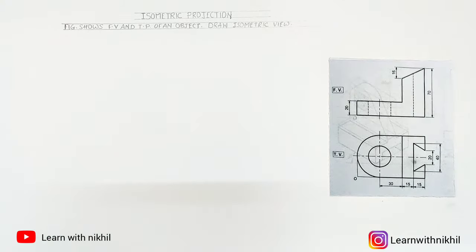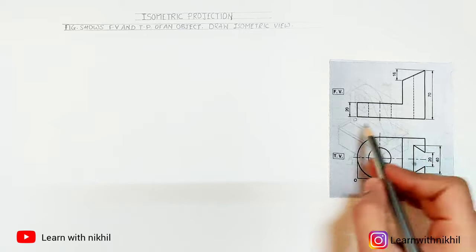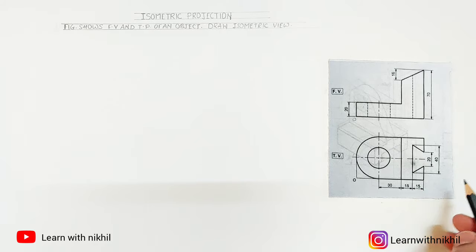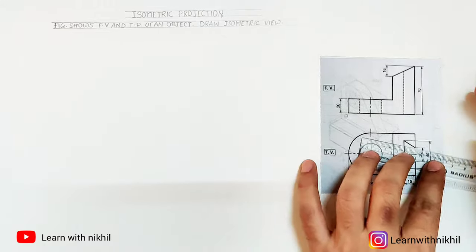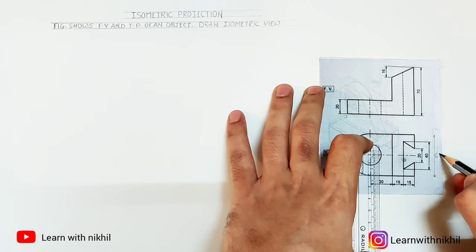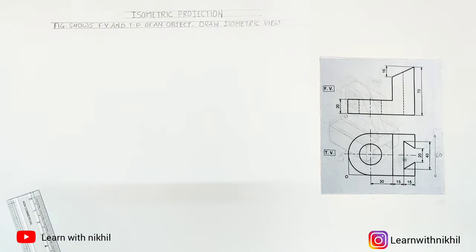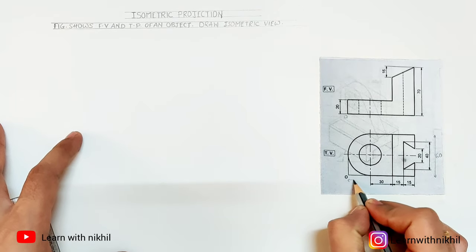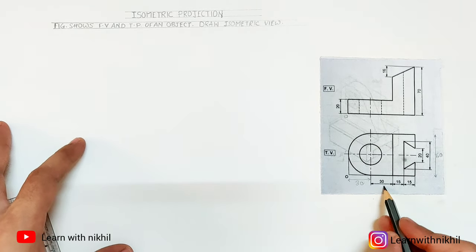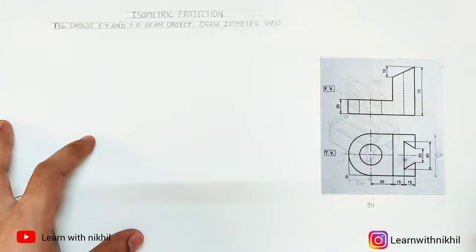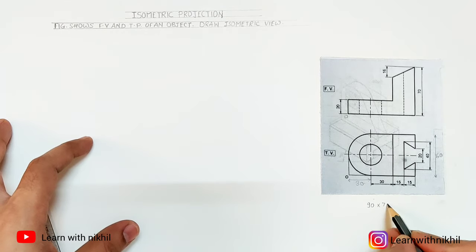This is point O, which will be the starting point. The width of the total front view is 30 plus 15 plus 15. The diameter of the semicircle is not given, so we'll consider it as 60 millimeters. The radius will be 30 — half of the diameter — so the total distance of the front view will be 30 plus 30 plus 30, which is 90. Height is 70 and the width is nothing but the diameter of the semicircle, that is 60.